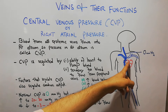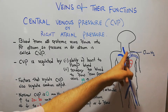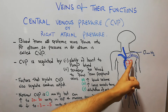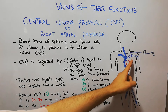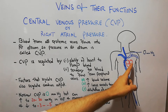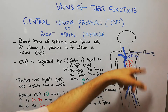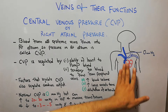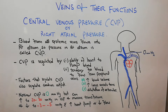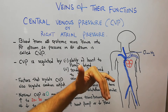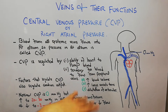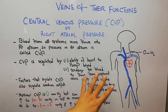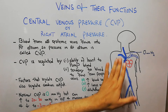Blood from the right atrium goes into the right ventricle, from the right ventricle it goes into the lungs, from the lungs it comes back as oxygenated blood into the left atrium, from the left atrium into the left ventricle, and from the left ventricle it goes again into the human body and returns back to the heart via veins. We have discussed the arteries, their functions and the arterial pressure — now it's the turn to discuss the veins and their functions.